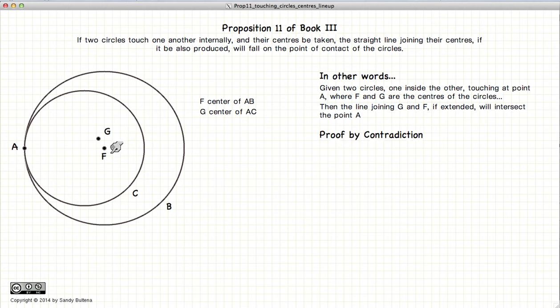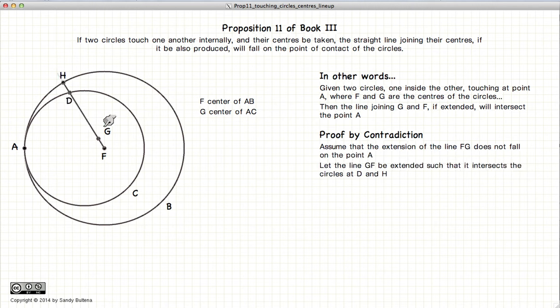Proof by contradiction. Let's assume that the center of the inner circle G is located at a different point. We will draw our line from F to G and extend it outward. Now we have our line crossing the circles at points D and H.